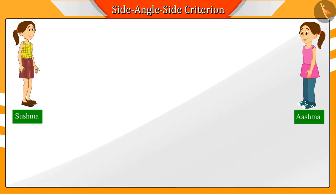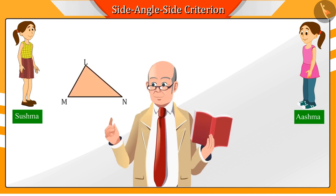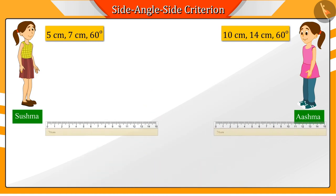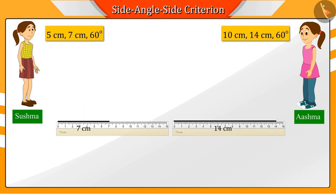Shushma and Ashma were asked to make one triangle each by their teacher, for which the teacher gave them the measurement of two sides and the angle included in them. Shushma and Ashma made their triangles using the given measurement.